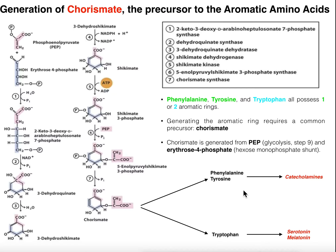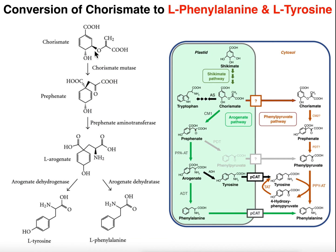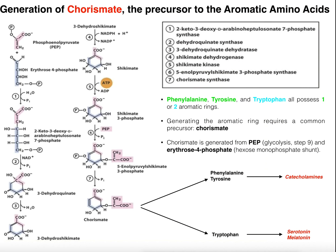Phenylalanine and tyrosine can be processed further in humans to make neurotransmitters and hormones called catecholamines. Additionally, tryptophan that we intake can be used in humans to generate serotonin, a neurotransmitter, and melatonin, a hormone released by the pineal gland — we'll come back to melatonin in a separate video. Hopefully this pathway of generating charismate makes sense. In the next video we'll talk about the conversion of charismate into phenylalanine and tyrosine. Please like this video and subscribe for future videos.